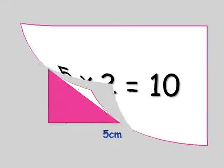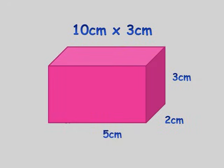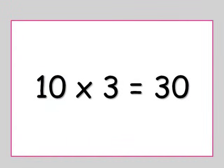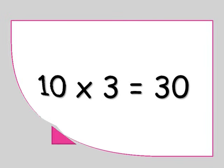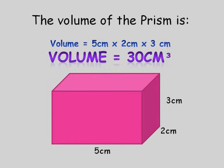Our next step is to times 10 centimetres, which is our length times our width, by 3 centimetres, which is our height. So, 10 times 3 equals 30. The volume of our prism is 30 centimetres cubed, because we timesed 5 centimetres (our length) times 2 centimetres (our width) times 3 centimetres (our height), which gave us 30 centimetres cubed.